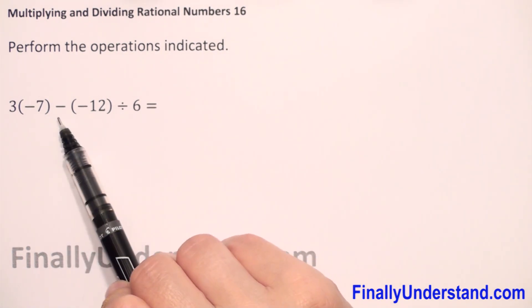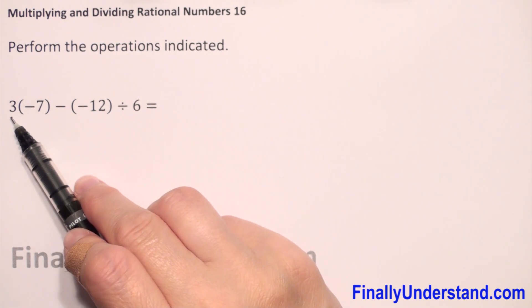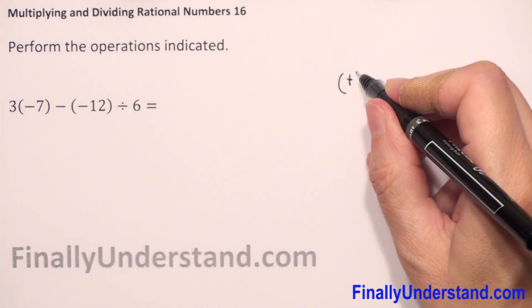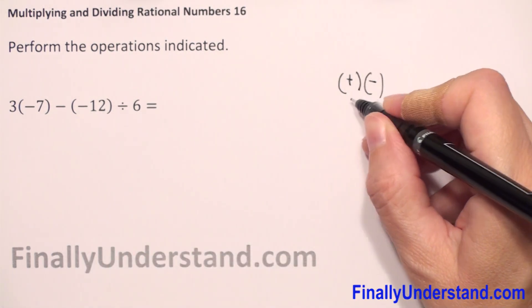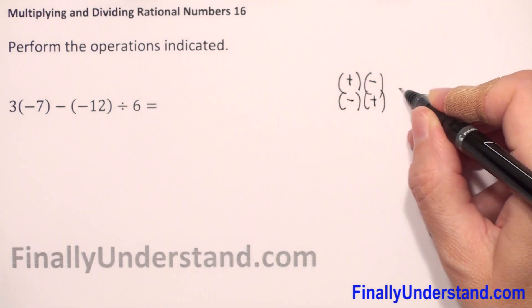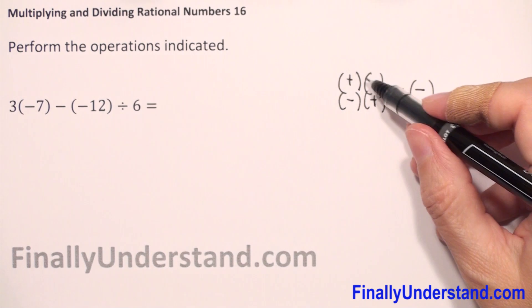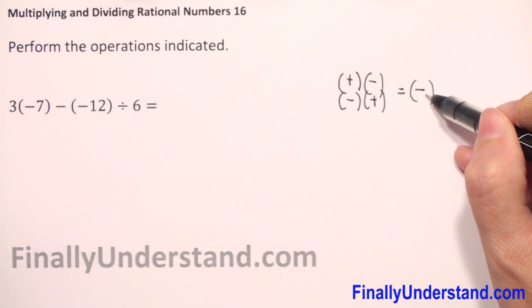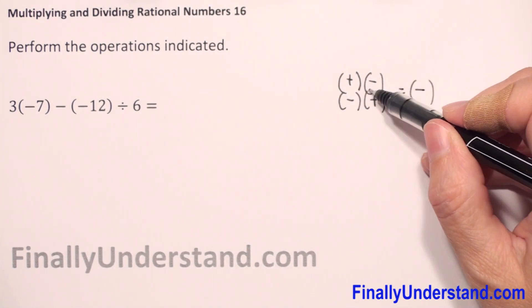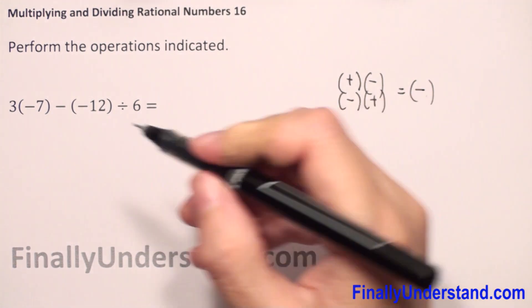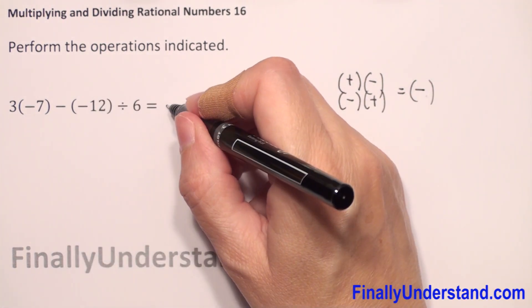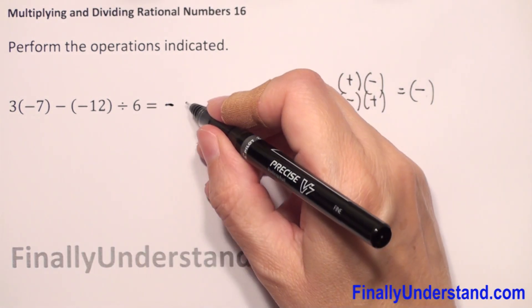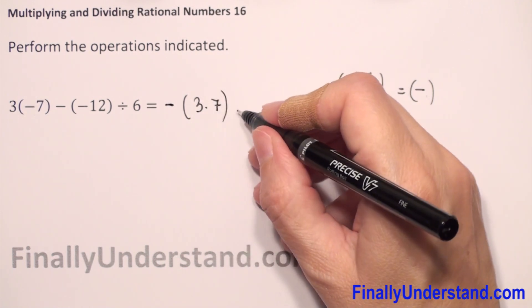First we have 3 times negative 7. When we have a positive number times a negative — positive times negative or negative times positive — the answer is always negative. It doesn't matter whether we have multiplication or division; if one of the two numbers is negative, the answer will be negative. So 3 times negative 7 gives us a negative sign, and 3 times 7 is 21, giving us negative 21.